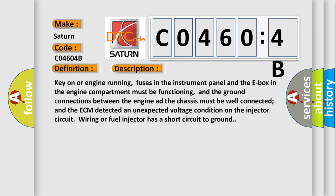Key on or engine running, fuses in the instrument panel and the E-box in the engine compartment must be functioning, and the ground connections between the engine and the chassis must be well connected. The ECM detected an unexpected voltage condition on the injector circuit. Wiring or fuel injector has a short circuit to ground.